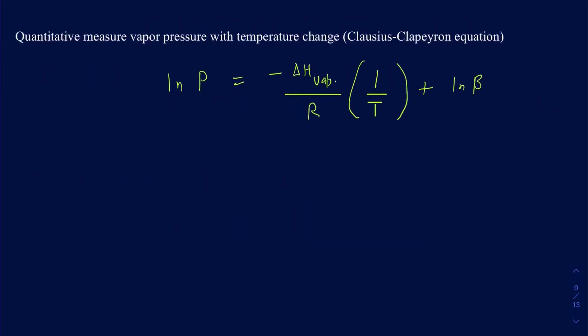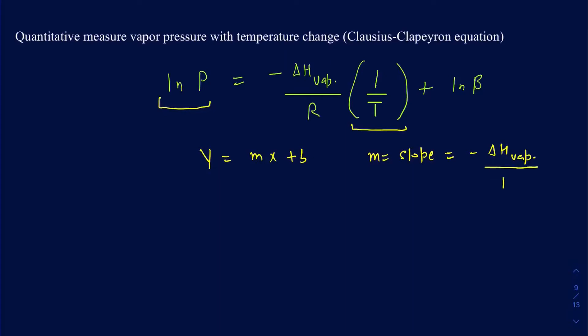The quantitative relation between vapor pressure and temperature can be measured using the Clausius-Clapeyron equation. That equation relates the vapor pressure in the form of natural log P with the temperature as 1 over T. The relation is similar to a slope-line equation: Y = MX + B, where M is the slope. In this case, your slope is going to be negative delta H vaporization over R, and B is the Y-intercept.